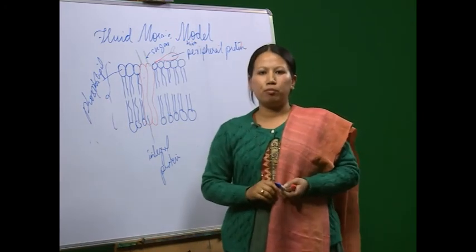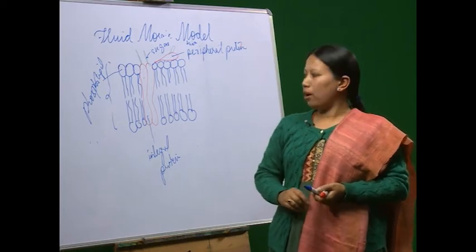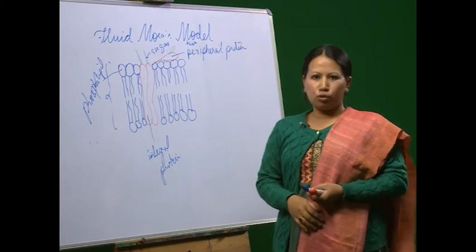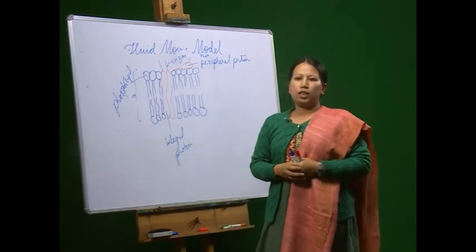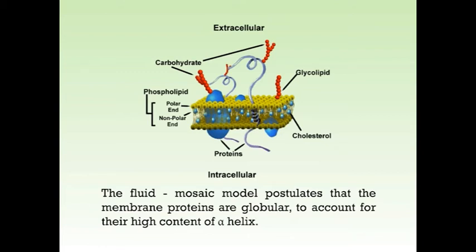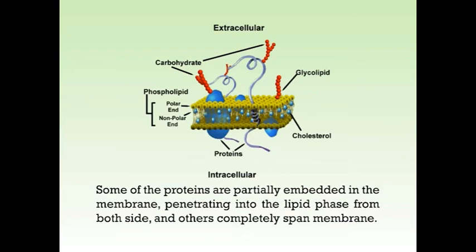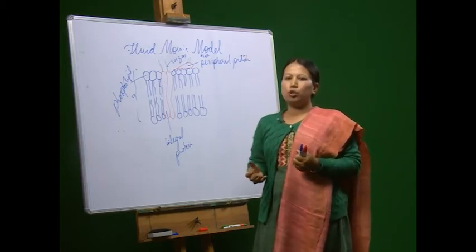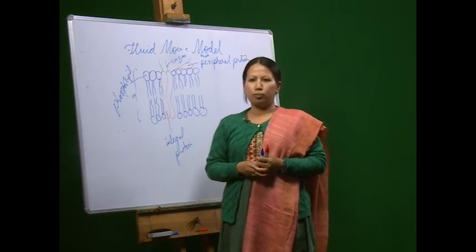According to this model, the cell membranes have been visualized as a mosaic of lipids and proteins. This model postulates that the phospholipids of the membrane are arranged in a bilayer in which the peripheral and integral proteins are embedded to form a fluid liquid crystalline matrix or core. The model is often likened to an iceberg — the membrane proteins floating in a sea of predominantly phospholipid molecules. The fluid mosaic model postulates that membrane proteins are globular to account for their high content of alpha helix. Some of the proteins are partially embedded in the membrane, penetrating into the lipid phase from both sides, and others completely span the membrane.